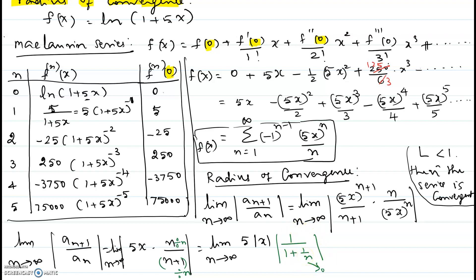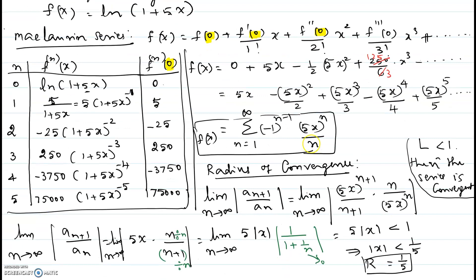So the whole limit becomes 5 times the absolute value of x. For the series to be convergent, this must be less than 1, meaning the absolute value of x must be less than 1 over 5. That gives us the radius of convergence R equals 1 over 5. To summarize: the first part was writing f of x as a Maclaurin series — a Taylor series centered at 0 — and the second part was finding the radius of convergence using the ratio test. Hope this video helped!